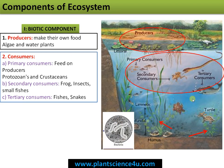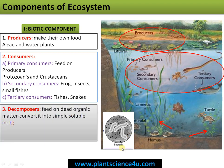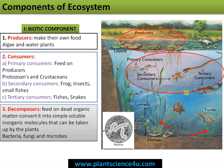The third group handles recycling — all dead and decayed matter is recycled back to the system by decomposers. Decomposers feed on dead organic matter and convert it into simple molecules that can be taken up by plants. This group includes bacteria, fungi, and all other microbes.